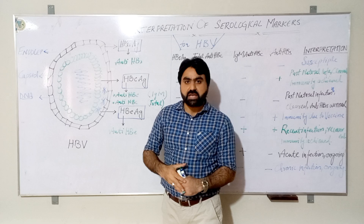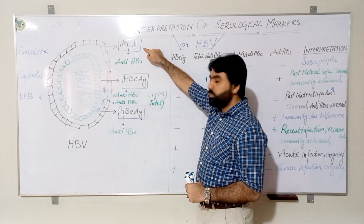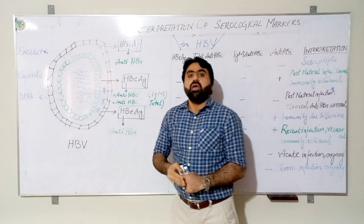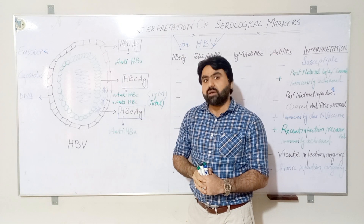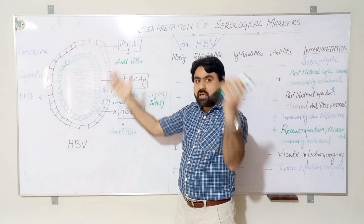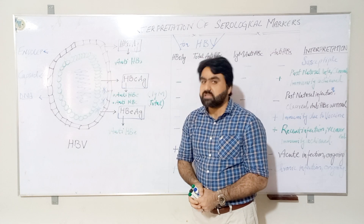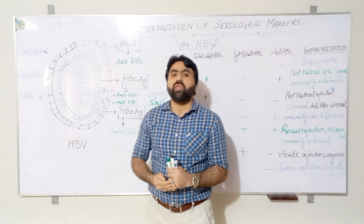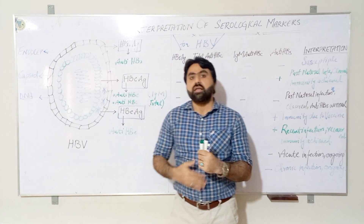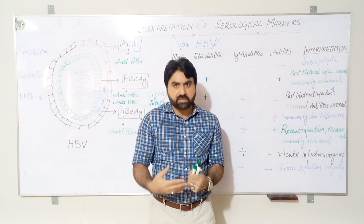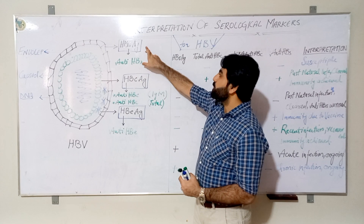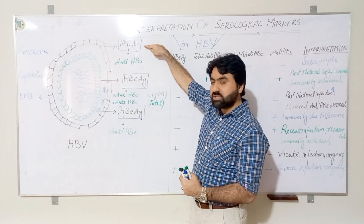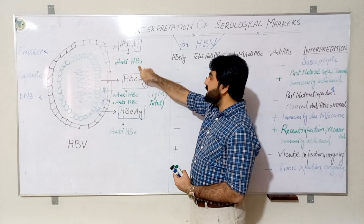The most important antigen is hepatitis B surface antigen (HBsAg), which is part of the envelope of the hepatitis B virus, present at the outermost surrounding of its structure. Our immune system produces antibodies against foreign antigens, so the antibodies produced against HBsAg are known as anti-HBs.